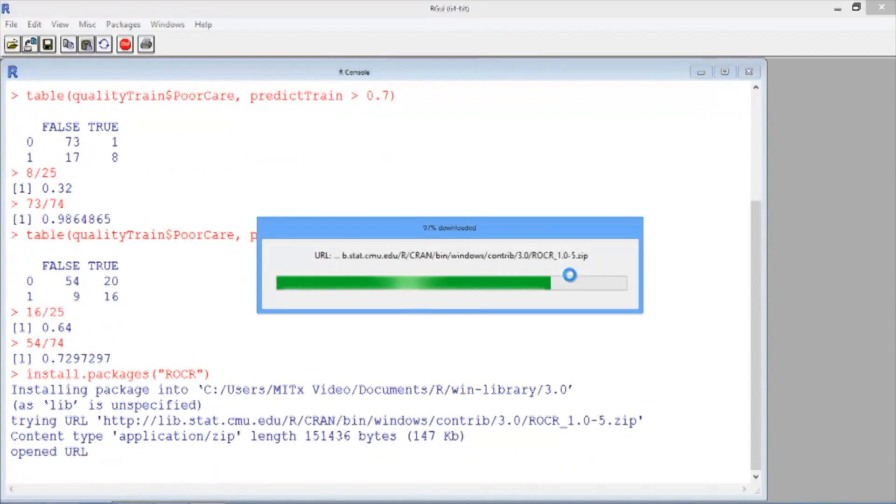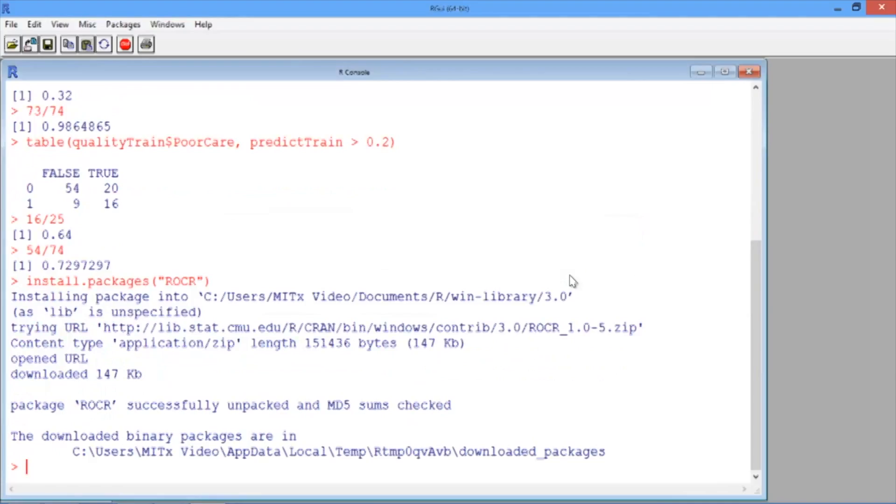Since we picked a CRAN mirror already in this R session, we shouldn't have to pick it again. You know the package is done installing when you see the arrow and blinking cursor in your R console. Now let's load the package using the library function.